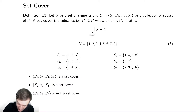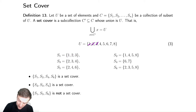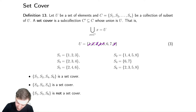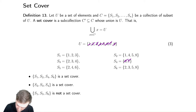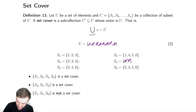S1 contains 1, 2, and 3, which means that 1, 2, and 3 are covered. S2 has 1, 4, 5, 8, so we cross out 4, 5, and 8. S4 contains 6 and 7. And S6 contains 2, 3, 5, 8. So this is a set-cover because we've crossed out everything.